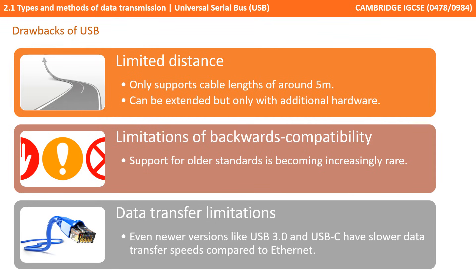Although overall the backwards compatibility is an advantage, early versions of the standard — for example version 1 — are often no longer supported. There are also data transfer limits. Even the latest versions such as USB 3 and USB-C have slower data speeds than the potential offered by some Ethernet cables.